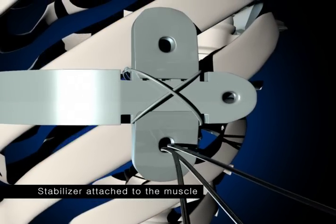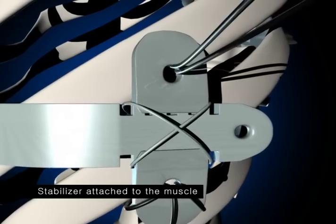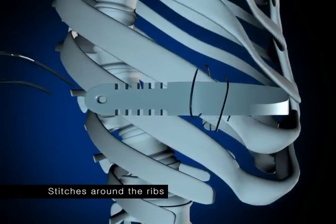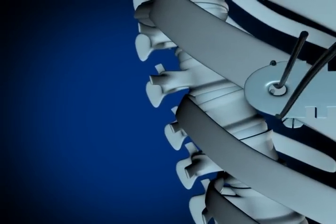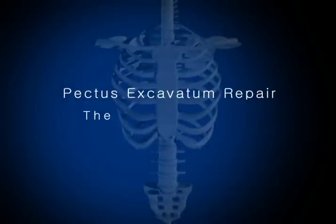It's then secured by means of metal stabilizers through the ribs on either side. The correction is physical right away after the bar is put in place to move the sternum to the desired position.